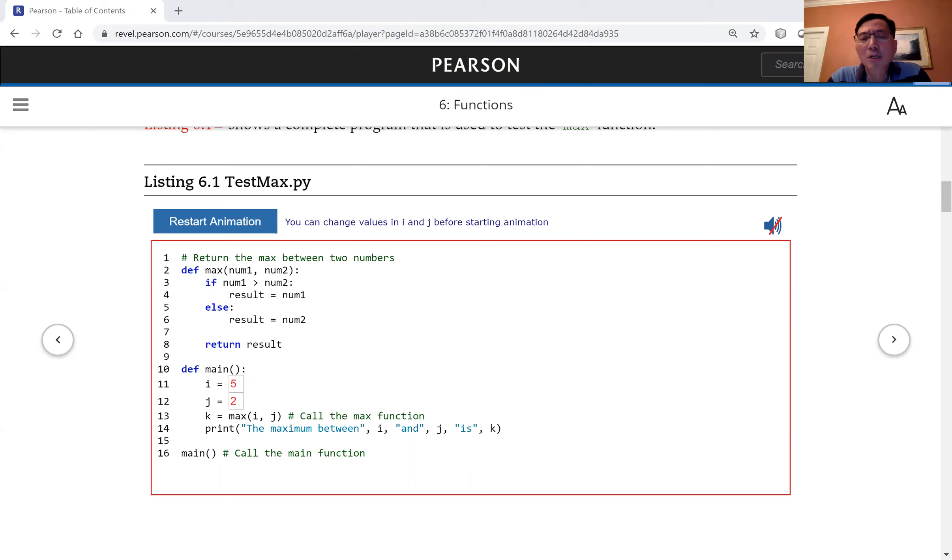Code animation simulates the execution of a program and lets students step through the code, showing and explaining what is happening in the program.